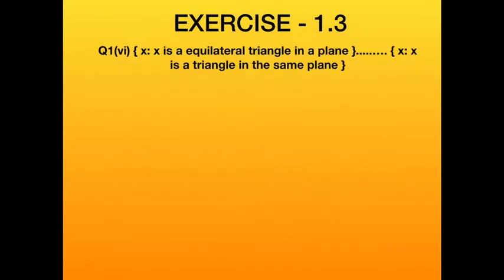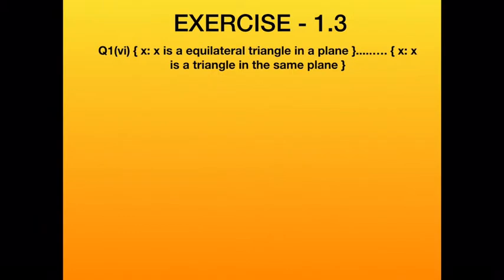The sixth part: the first set is {x : x is an equilateral triangle in a plane} — only equilateral triangles. The second set is {x : x is a triangle in the same plane} — you can write equilateral, isosceles, scalene, or right-angle triangles. Since equilateral triangles are included in the second set, all elements of the first set are in the second. So the first set is a subset of the second. Write: subset.